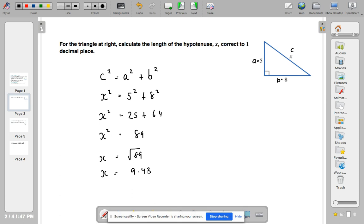So there we go. There's our first example. Using Pythagoras' theorem, how we can find out the missing side, the hypotenuse.